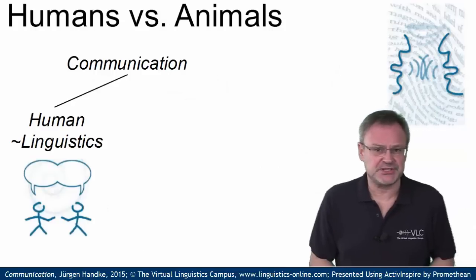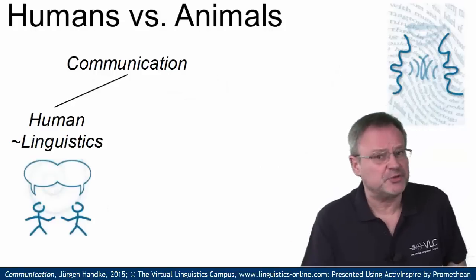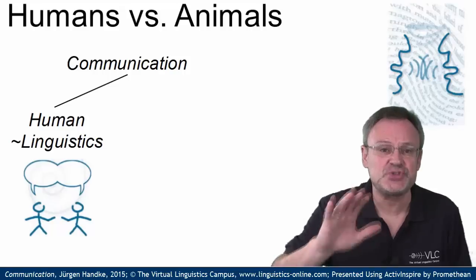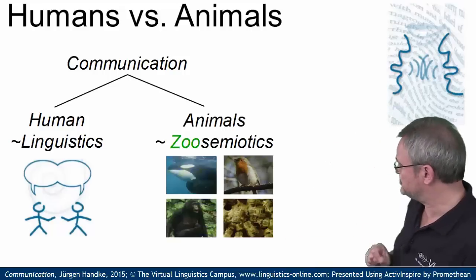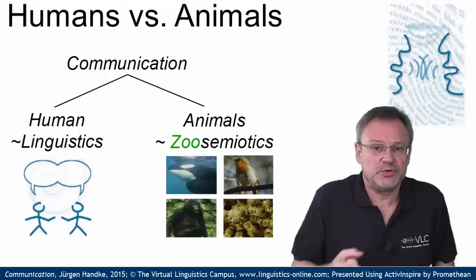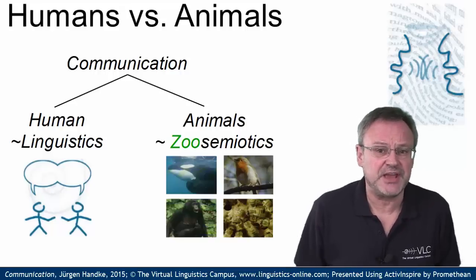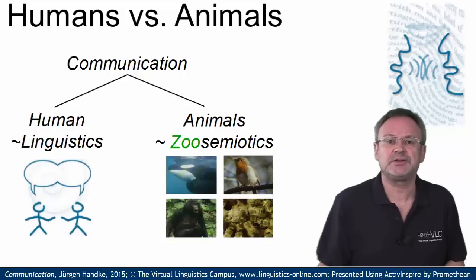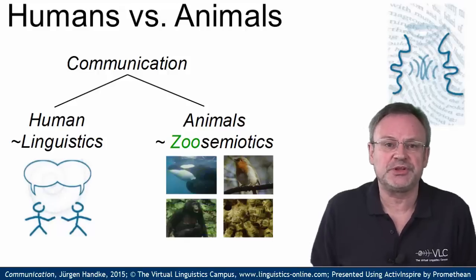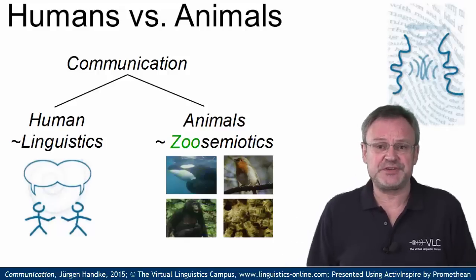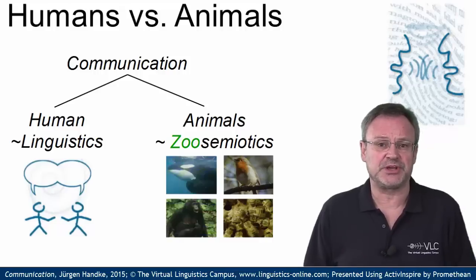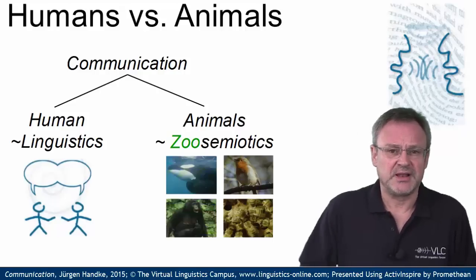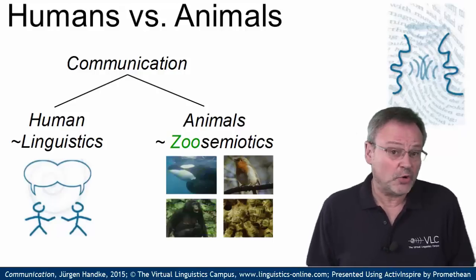The general assumption is language is confined to humans. It is studied under the heading of linguistics, but communication is not. Animals use several communication systems too, largely studied under the heading of zoo semiotics. Bees use their tail wagging dance to communicate, birds and whales communicate by means of songs, and primates have sophisticated systems of communication. These communication systems help animals to find food, allow them to migrate, or to reproduce themselves.